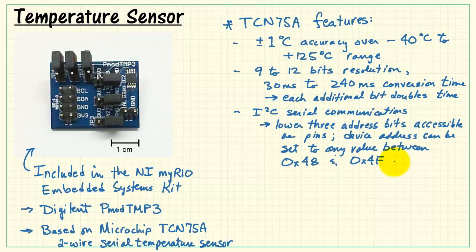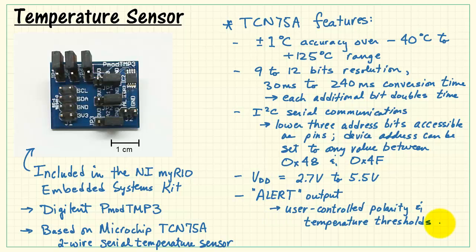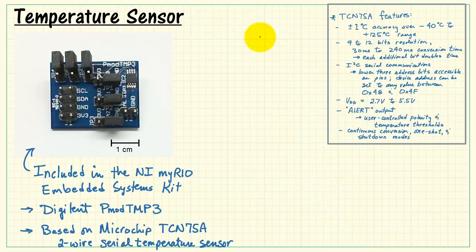The lower 3 address bits are accessible as pins. That means the device address can be set to any value between hex 48 and 4F. Supply voltage is 2.7 volts up to 5.5 volts. You have a user programmable alert output pin. You can control its polarity and temperature thresholds. And you also have continuous conversion, one-shot, and shutdown operating modes.